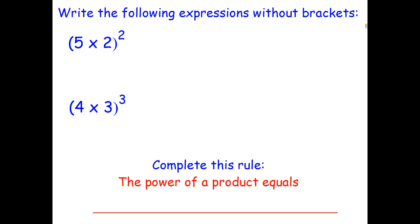The instructions here are slightly different to what we had in the previous ones. The previous questions said simplify the expression. Here, you're being asked to write the following expression but without the brackets. So here we have in brackets five times two, all squared, and I want to rewrite that without the brackets.